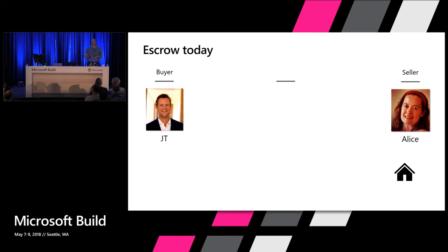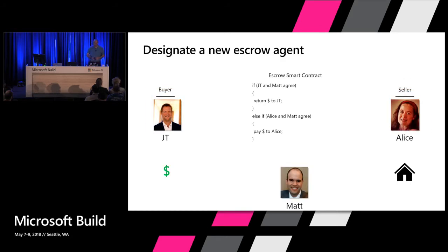Now JT and Alice are not particularly happy. The only thing that prevents me from doing that is I might get arrested for theft — probably a felony. The interesting thing that smart contracts let us do is not replace my job as an escrow agent, but augment me with some code that puts guardrails around what I can do. So now JT doesn't give the cash to me — JT gives the cash to the smart contract.